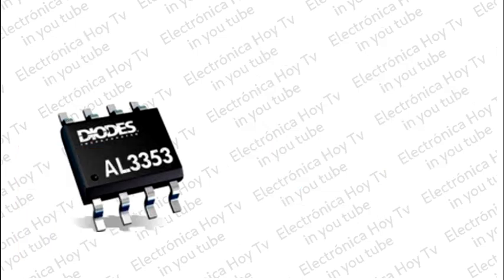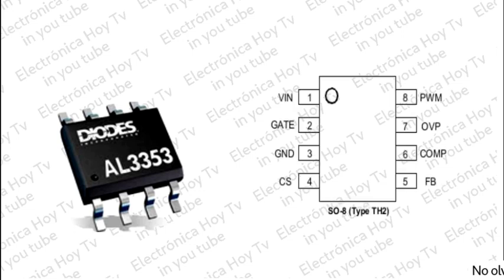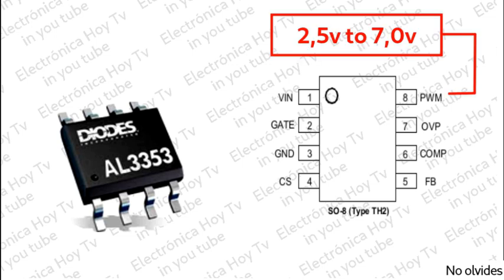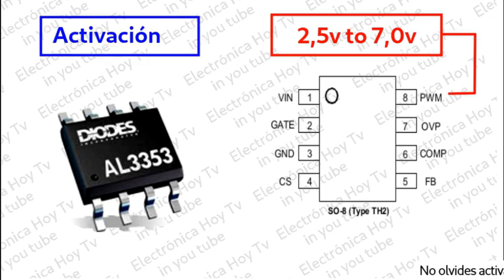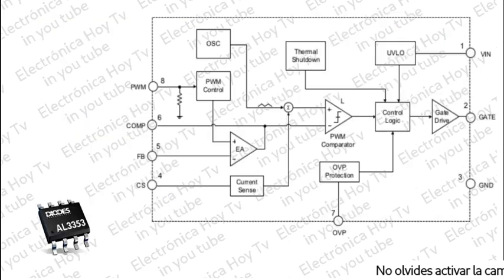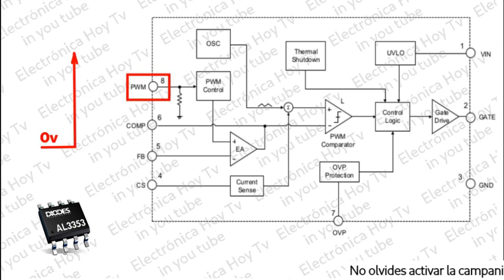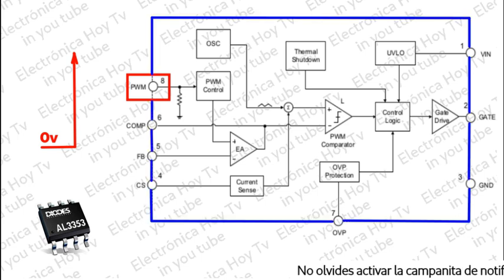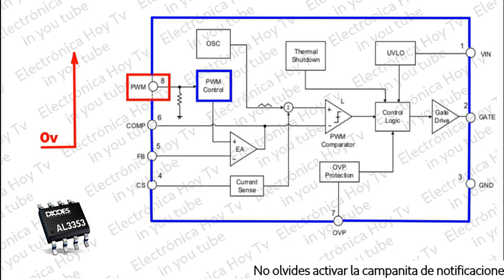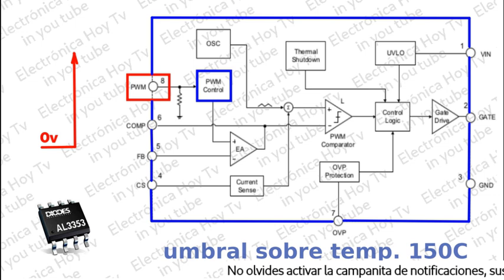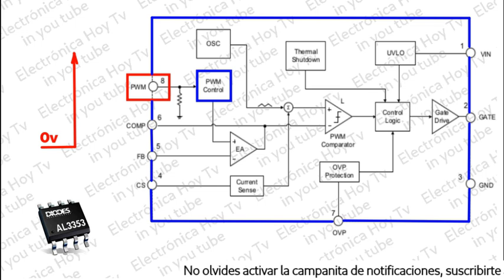El AL3353 se habilita en el arranque aplicando un voltaje superior a 2.5 voltios al pin PWM. Cuando se aplica desde tierra el primer flanco ascendente al pin PWM, el AL3353 se enciende inmediatamente y permanece encendido hasta que se activa la entrada PWM, momento en que el integrado entra en modo de espera.